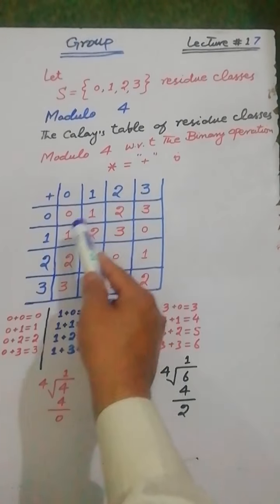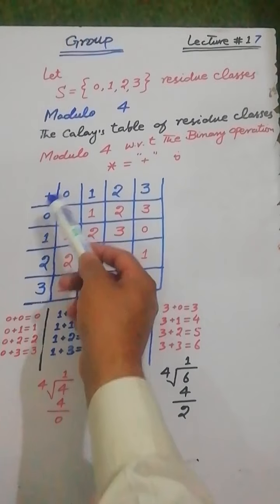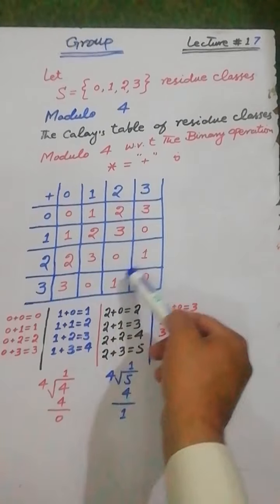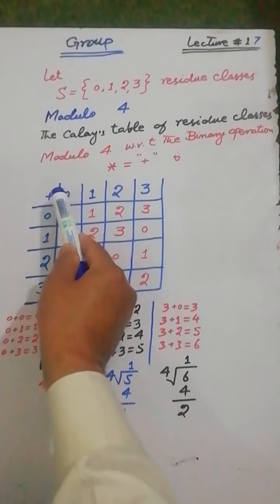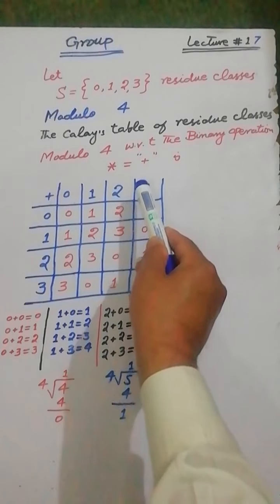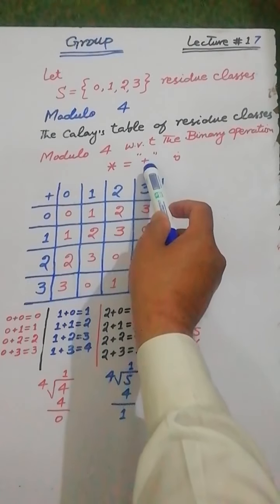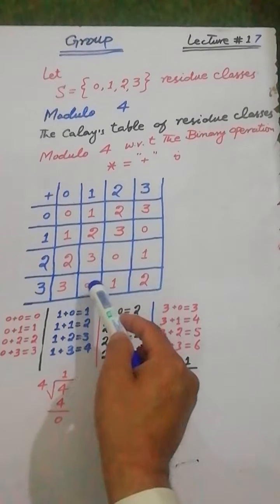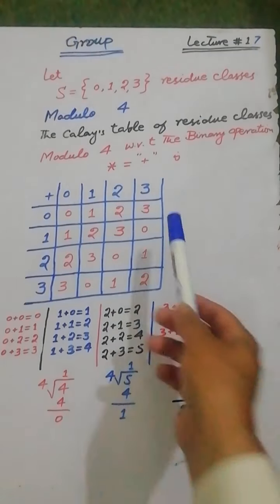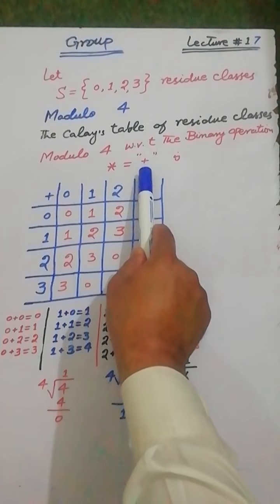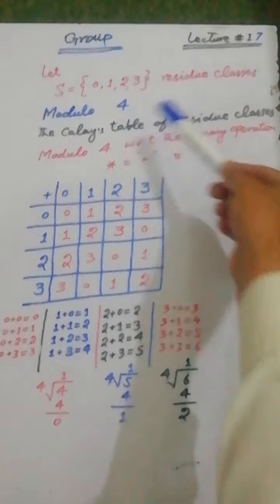All of these elements are elements of the set S. When we add any element of S with any element of S under residue classes modulo 4, where the binary operator is addition, all results are elements of S. Therefore, addition is a binary operation on the set S under residue classes modulo 4.